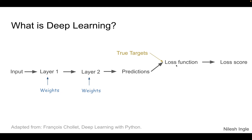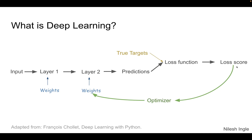To check if the predictions are close to the actual target, we compare them using something called a loss function, which gives us a loss score. The idea is always to minimize this score — the lower the score, the closer the predictions are to the true targets. If after the first iteration the predictions are far off, we run them through the optimizer, which changes the weights within the neural network. The predictions are then recalculated, and this cycle repeats until we reach a final score we are satisfied with.